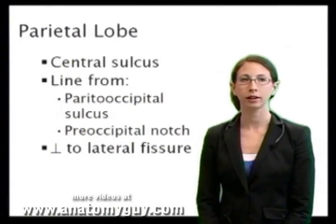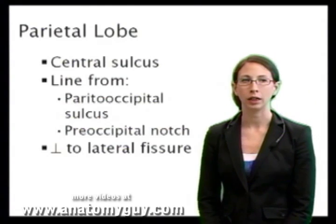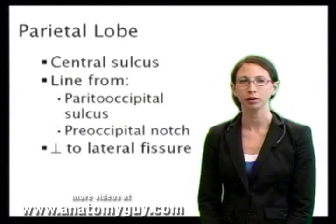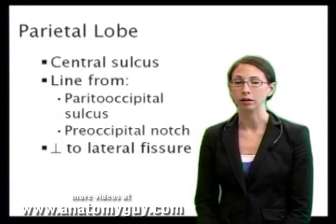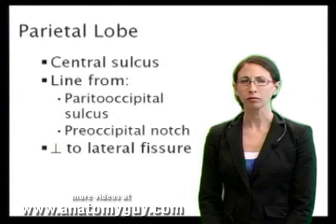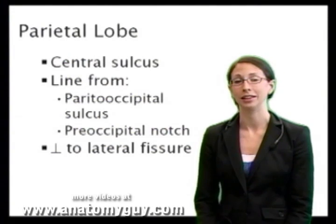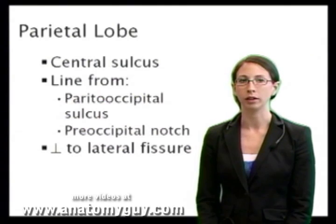We will next discuss the boundaries of the parietal lobe. The most anterior boundary of the parietal lobe is the central sulcus. The posterior boundary is a line that extends from the parietal occipital sulcus superiorly to the preoccipital notch — this is an imaginary line that is created. Then you would draw a line perpendicular from the edge of the lateral fissure back to that imaginary line, and that would create your inferior boundary of the parietal lobe.